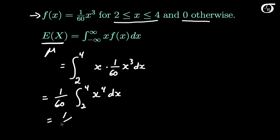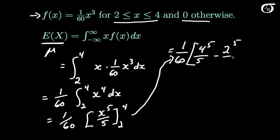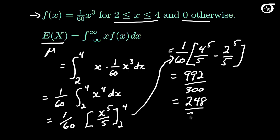This is going to be equal to 1 over 60 times the integral from 2 to 4 of x to the 4th power dx. This is equal to 1 over 60 times, when we integrate x to the 4th, we get x to the 5th over 5, and we need to evaluate that between 2 and 4. This is going to be equal to 1 over 60 times 4 to the 5th power over 5, minus 2 to the 5th power over 5. And this works out to 992 over 300, which in reduced form is 248 over 75, approximately 3.3.